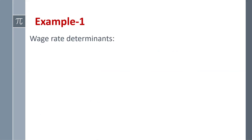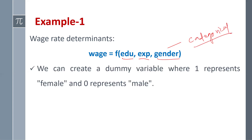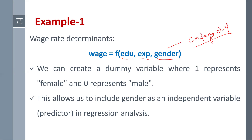Consider this example. Suppose we are working on wage rate determinants. Wage rate is a function of education, experience, and gender. Gender is our categorical variable. We can create a dummy variable where 1 represents female and 0 represents male. This allows us to include gender as an independent variable in our regression analysis.